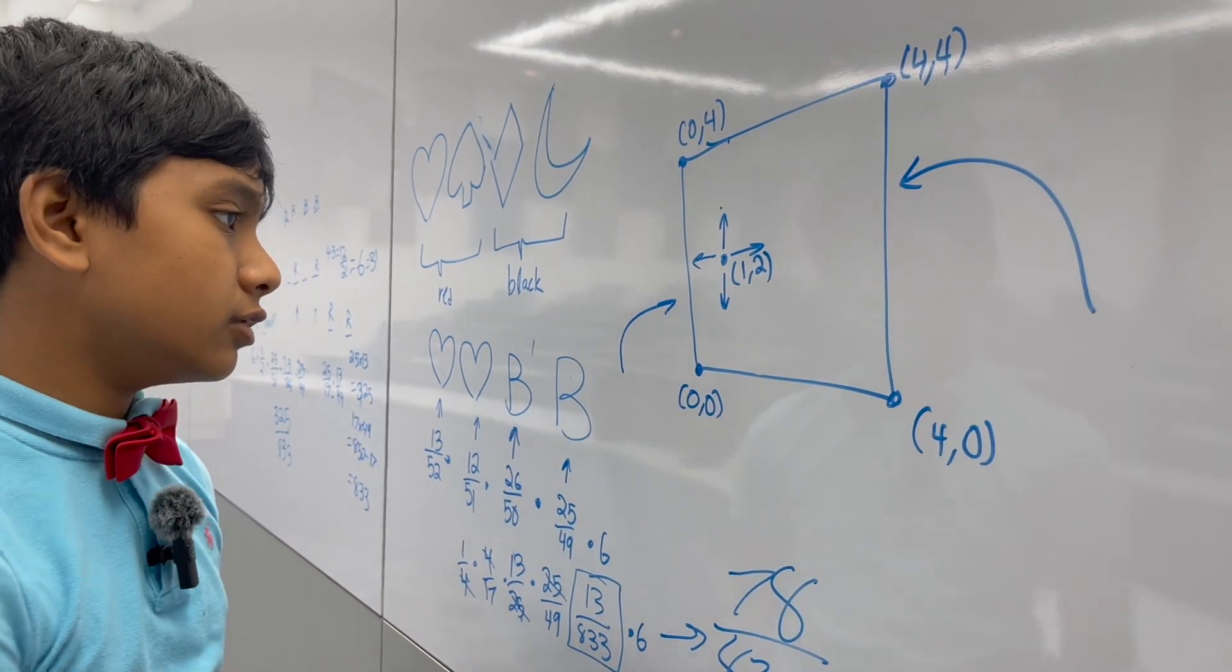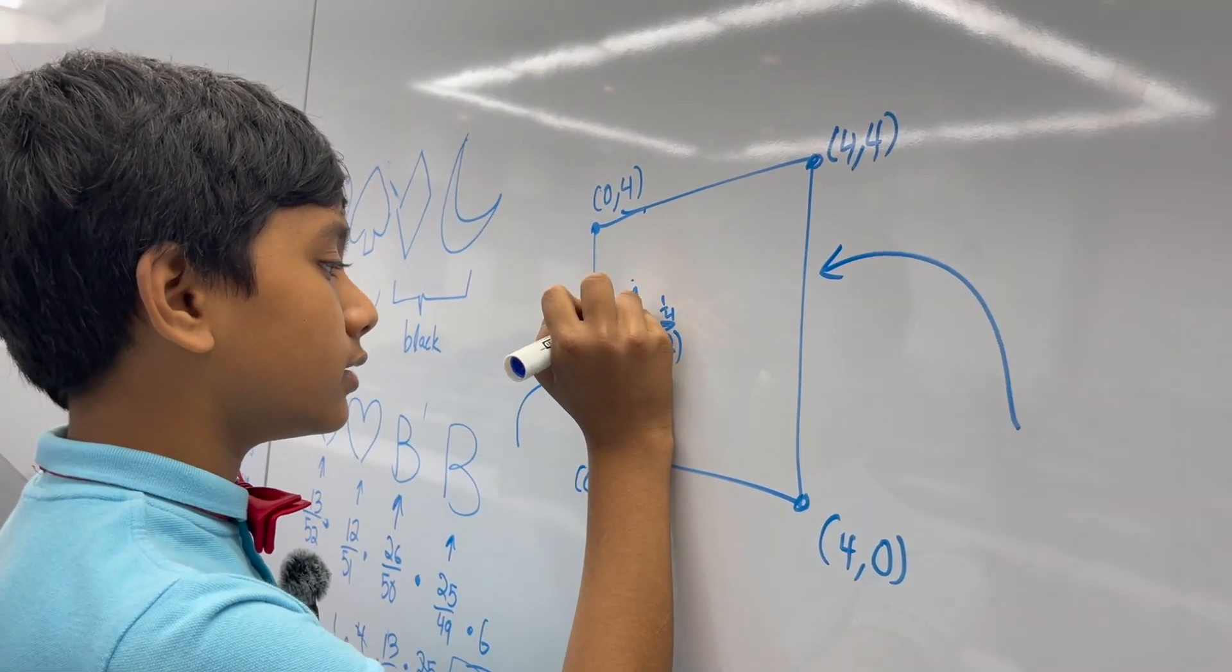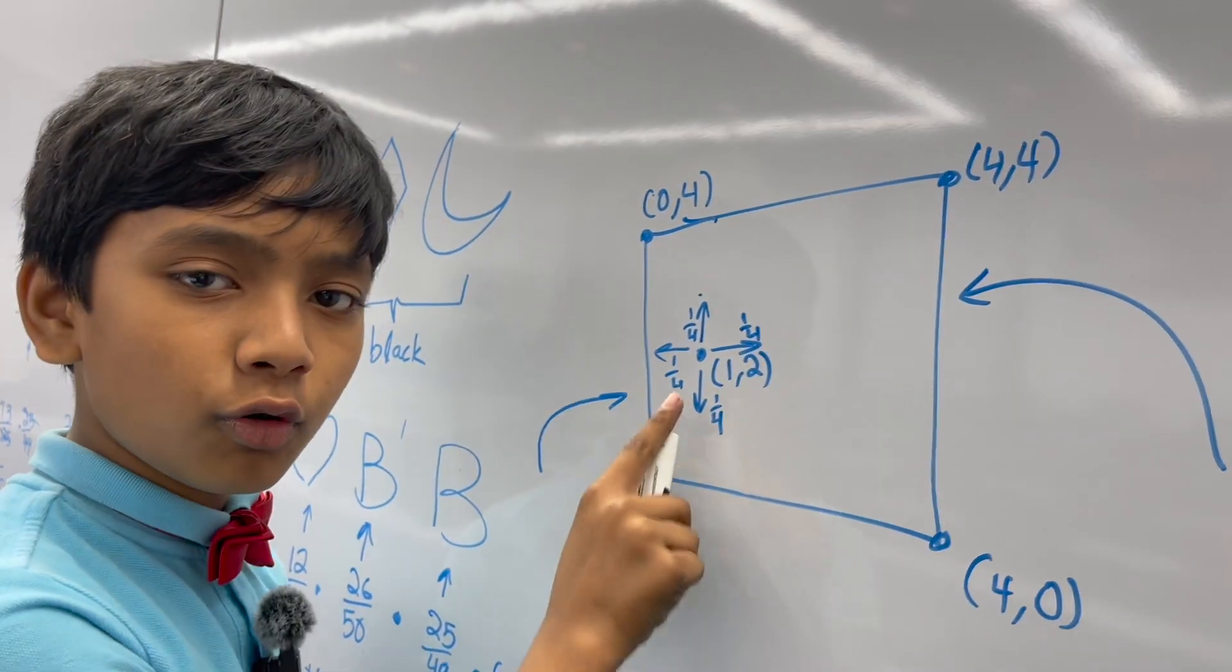Oh, and I forgot to tell you. The frog will move randomly. So, there's a 1-4th chance it goes this way, this way, this way, or this way. Have fun doing that for homework!